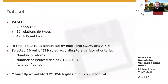We use YAGO as the basis for creating our dataset. As a first step, we generate rules by running AMIE and RuDiK on YAGO, deriving both positive and negative rules. In total, this resulted in 1,517 generated rules. To keep the annotation process within manageable scope, we selected 26 rules out of 589 rules that generated less than 5,500 facts. This selection was made based on properties such as the number of atoms in the rule, the facts it produces, or the rule's confidence value. We then manually annotated all facts generated by these 26 rules according to their correctness, ultimately resulting in a dataset consisting of 23,324 annotated facts.